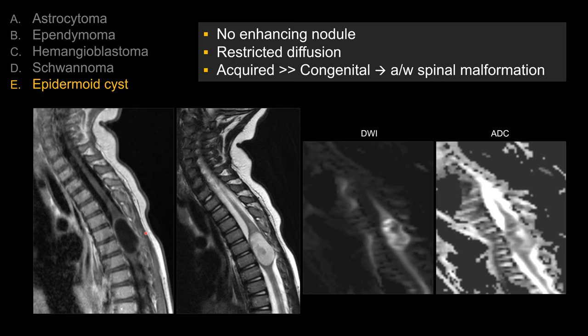Intracranial epidermoid cysts almost always occur as a congenital lesion. For spinal epidermoid cysts, the majority are acquired — often due to iatrogenic reasons such as prior procedures or lumbar puncture. They can also occur as congenital lesions, and in those cases they tend to associate with other spinal malformations such as spinal dysraphism or hemivertebra.